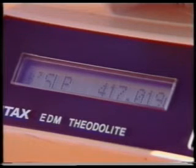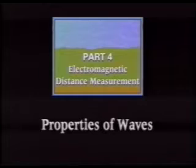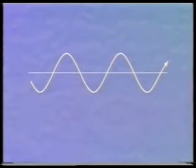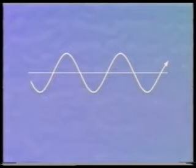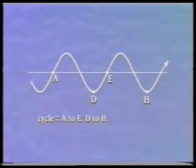In order to understand how the instrument works, we need to know some of the properties of waves. In their simplest form, electromagnetic waves can be considered as periodic sinusoidal waves. The wave completes a cycle in moving from identical points such as A to E or D to H on the wave, and the number of times it does this in one second is known as the frequency of the wave, which has units of Hertz.